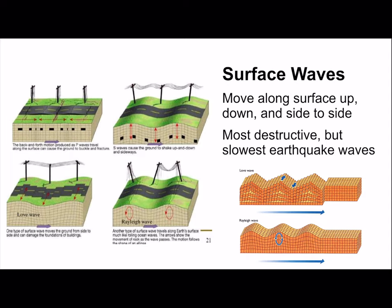Surface waves, as the name suggests, travel along the surface of the Earth. These move the slowest and cause the most destruction. The reason for surface waves' destructive potential is because while Rayleigh waves shake the ground in a circular motion, Love waves also shake the ground side to side. This greatly damages the foundation of buildings and can lead to their collapse.